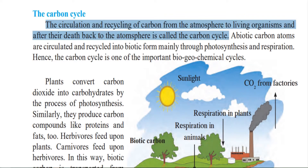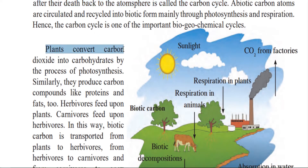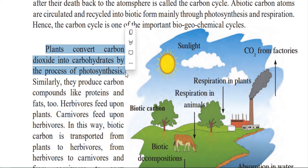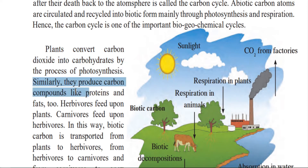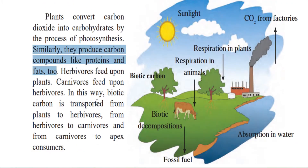Carbon dioxide is taken by plants to prepare their food, and then oxygen is released which we take in. Plants convert carbon dioxide into carbohydrates by the process of photosynthesis — in the presence of sunlight, they change carbon dioxide into carbohydrates, that is, they produce their own food. Similarly, they also produce other carbon compounds like proteins and fats.